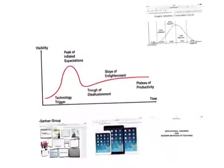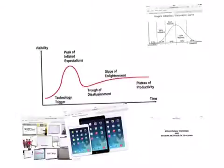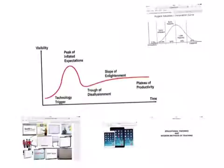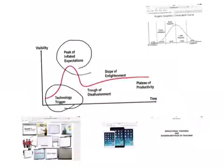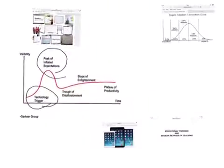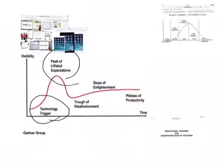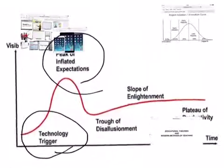As for smart board and iPad, you will find them raised from the technology trigger on to the peak like this, and then descend to the slope of enlightenment when a new modern one comes to life. But this happens only in the rich countries.